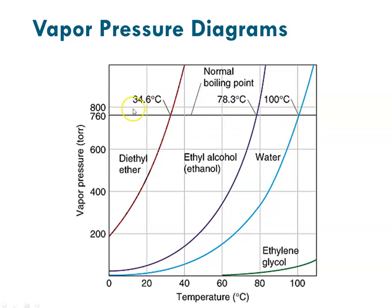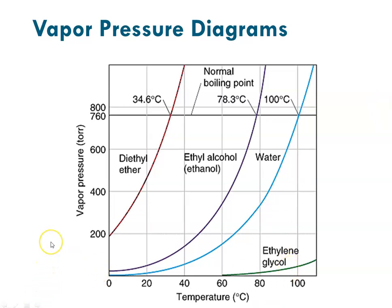Something else we can notice from vapor pressure diagrams is the relationship to intermolecular forces of attraction. The fewer forces of attraction between particles, the lower the boiling point. On this diagram, diethyl ether has the least intermolecular force of attraction. Water has very high intermolecular force of attraction, so it boils at a higher temperature. If we extrapolated ethylene glycol, it would boil way out around 200°C, showing the highest intermolecular force of attraction.